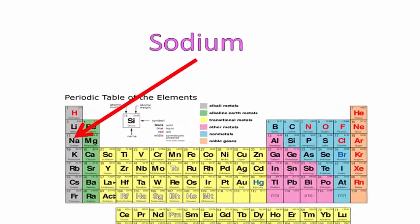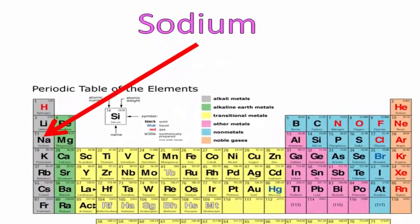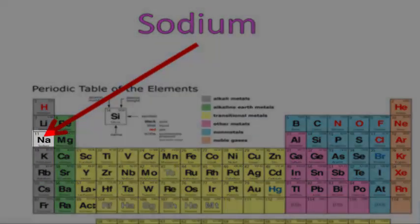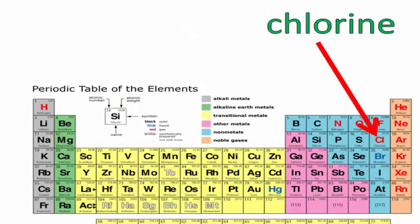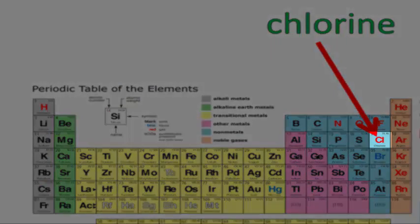The first element that we name is the one that's further on the left of the periodic table, sodium in this case, and we write its name in full, sodium. And then after that, we write the name of the one that's further on the right of the periodic table, chlorine in this case.